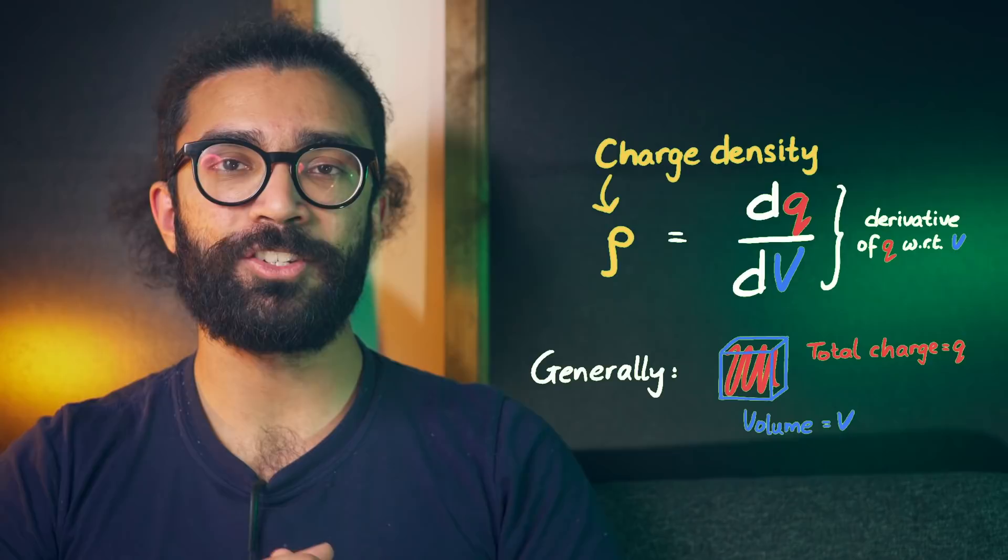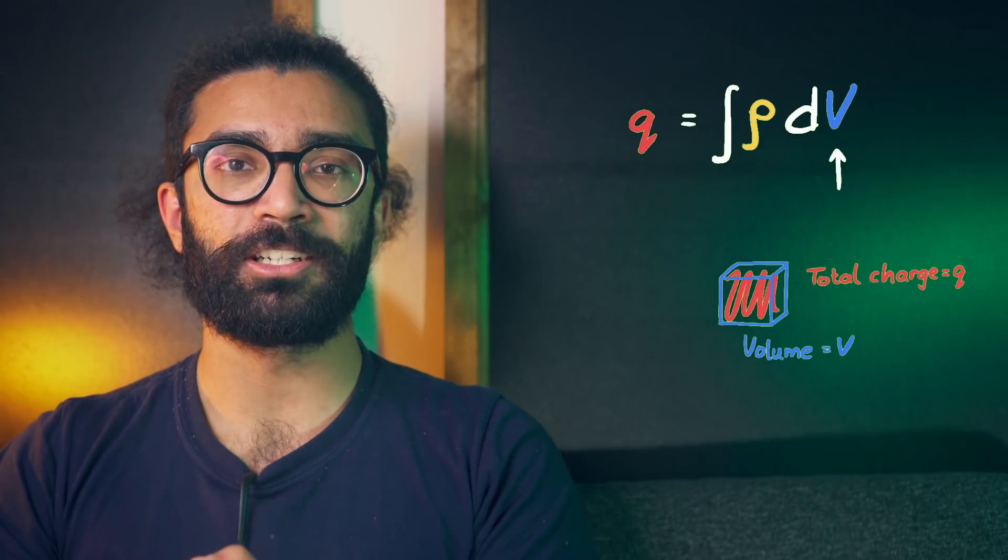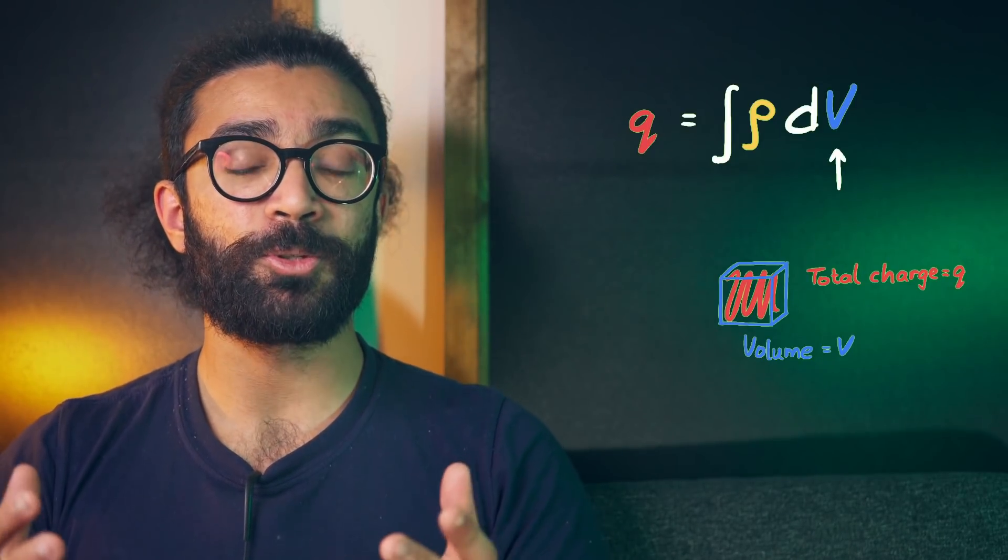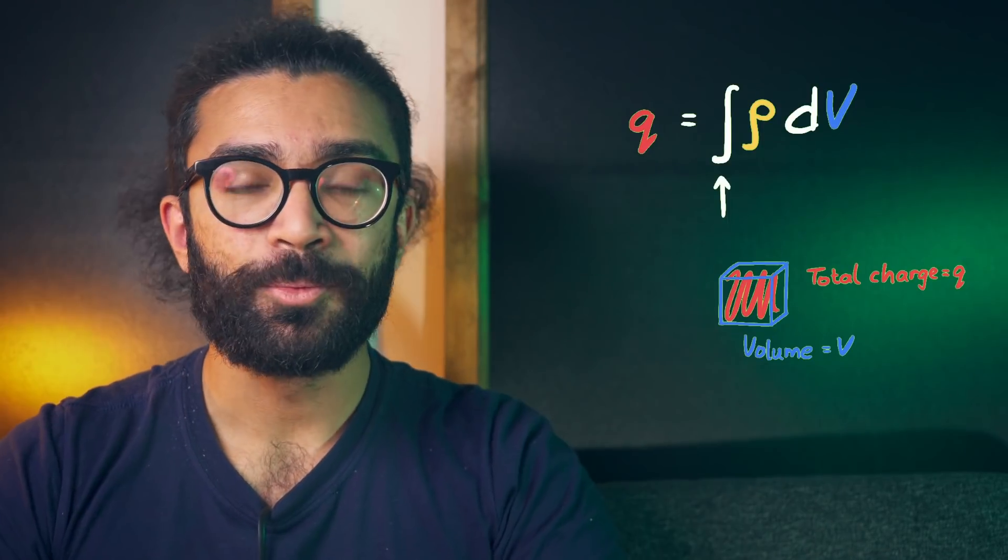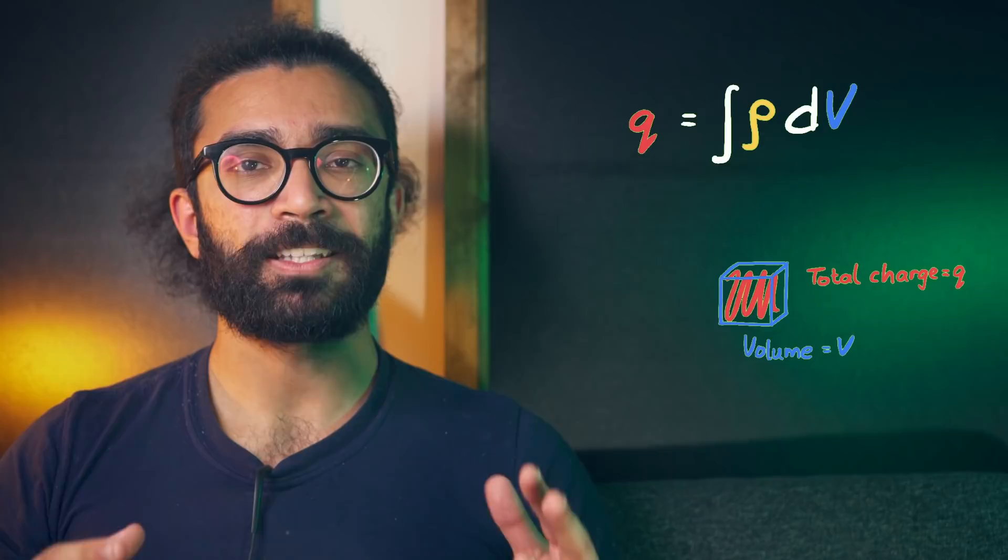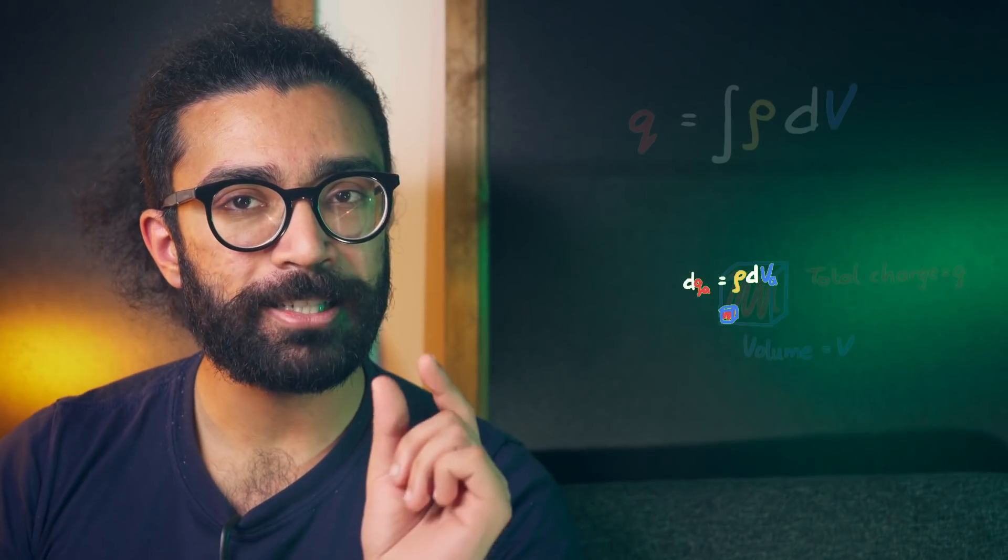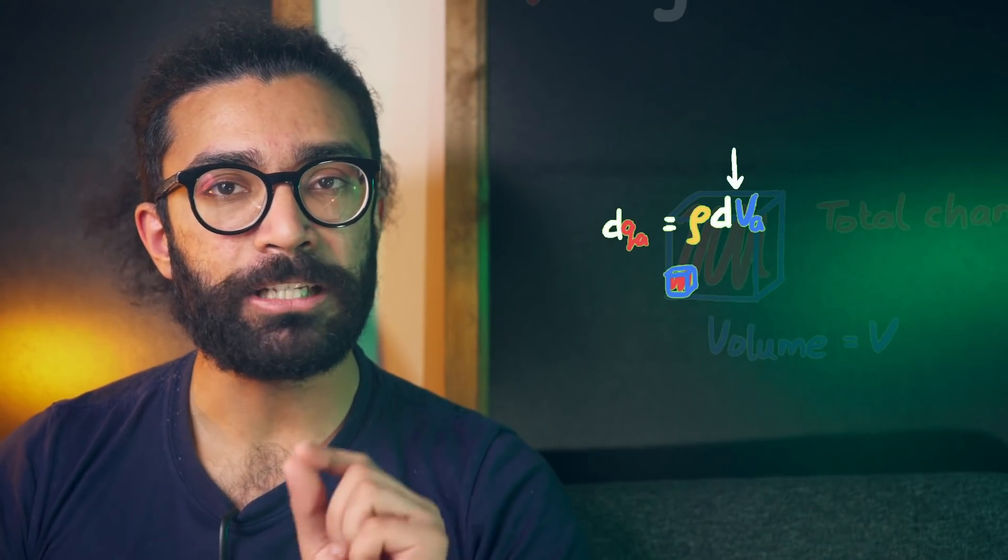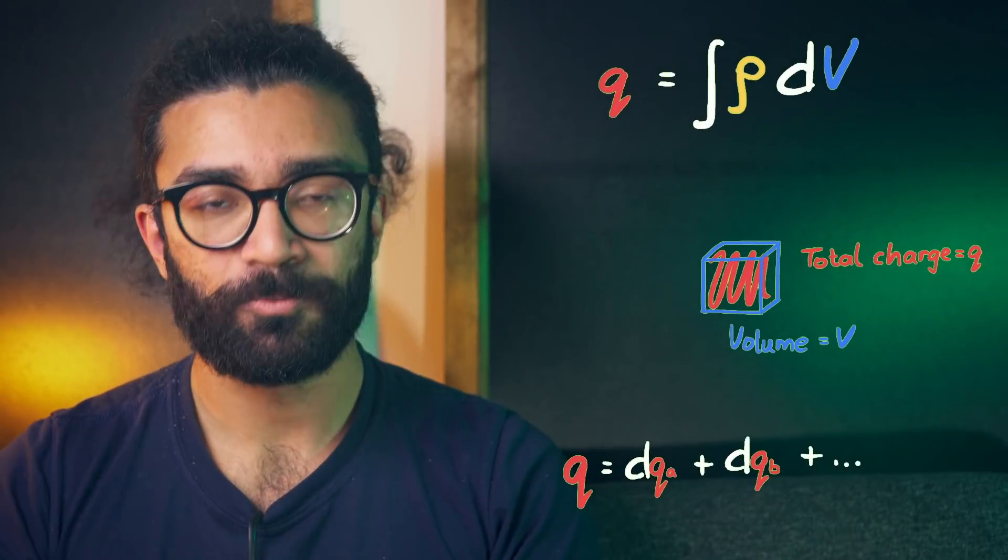Now let's rearrange this equation so that we find the charge of the particle in terms of the charge density and the volume of the region we happen to be considering. To do this, we have to do the opposite of taking a derivative, we integrate, with respect to the volume. Thus, we see that the charge of the particle can be thought of as the integral of the charge density with respect to volume. Now the physical interpretation of this is that the charge of the particle can be given by finding out how much charge there is per every tiny unit of volume in our region of space. We take the charge density, multiply it by each tiny volume to give us the amount of charge in this volume, and then we add up all of those charges to give us the total charge.